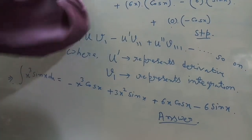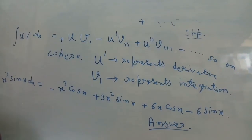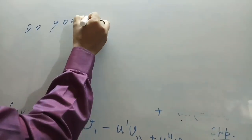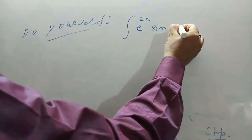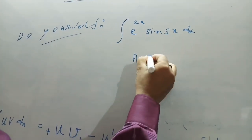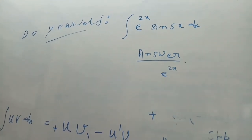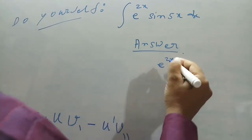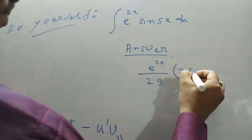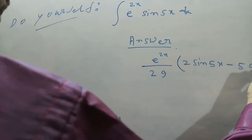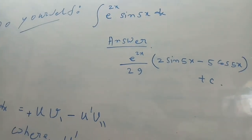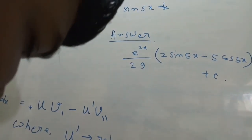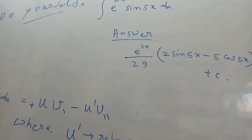This is the procedure of integration. Students, do yourself a sum: integral of e^(2x)·sin(5x)·dx. The answer is: e^(2x)/29 · (2·sin(5x) − 5·cos(5x)) + C, where C is the integrating constant. Don't forget to subscribe to this channel for upcoming video lectures, press like, and click on the bell icon. Thank you.